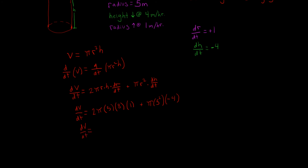So: 5 times 8 is 40, times 1 is 40, times 2 is 80 — so we get 80pi. Then 5 squared is 25, times 4 is 100, but it's negative 100, giving us negative 100pi. So 80pi minus 100pi gives us negative 20pi. The volume is decreasing at a rate of 20pi meters cubed per hour.